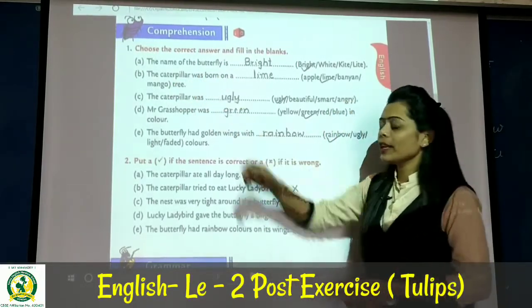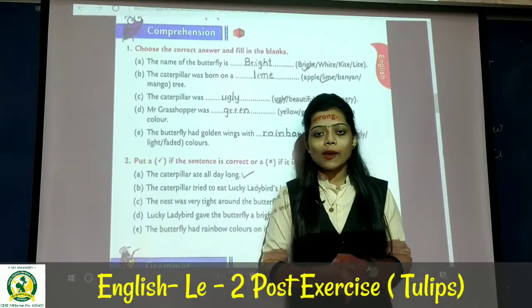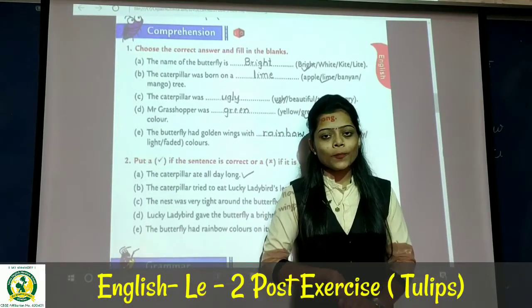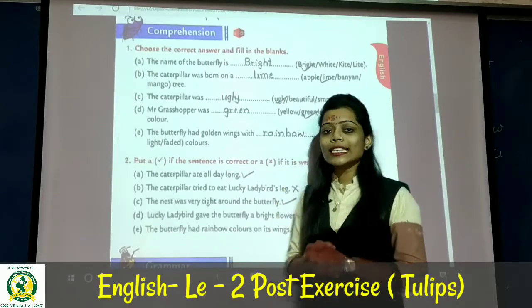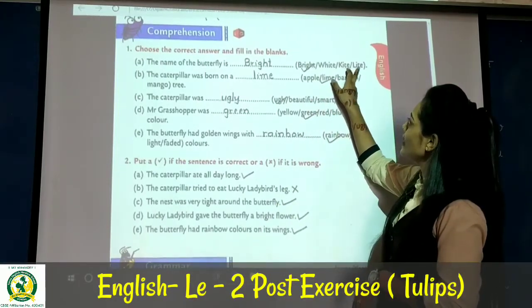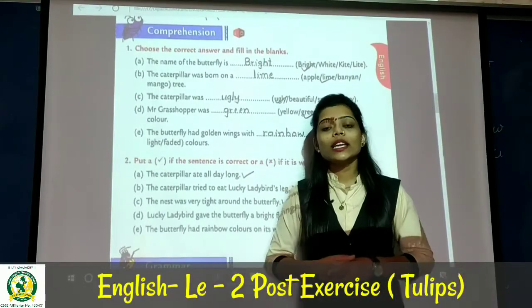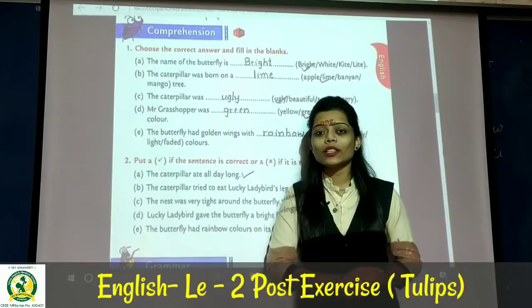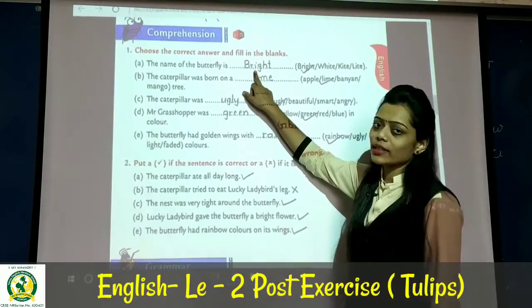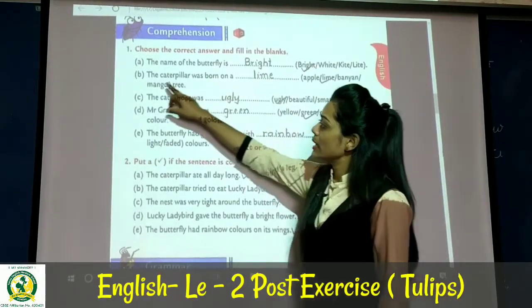First question: the name of the butterfly. We have learned lesson number two and seen the explanation part. The title itself says 'My Story Bright the Butterfly,' so the butterfly's name is Bright. Write 'bright' here.